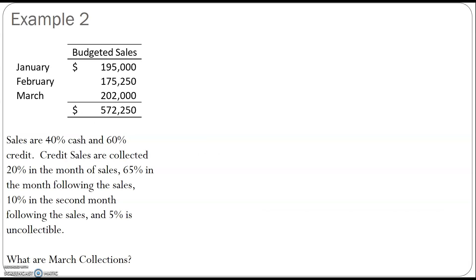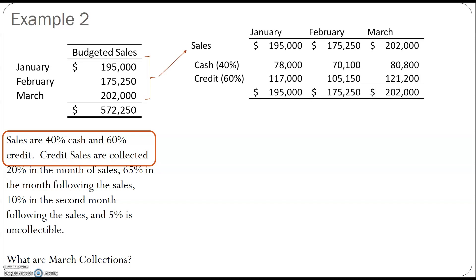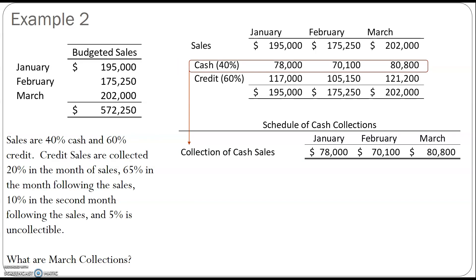Now let's look at another example. Here we have some budgeted sales and our information is a little different. The first thing we see is that sales are 40% cash and 60% credit. Cash sales would be collected at the time of sale — the customer comes in, buys their products, and pays right away. So the first thing we need to do is take that sales information and separate it into cash and credit sales, which are 40% and 60% respectively.